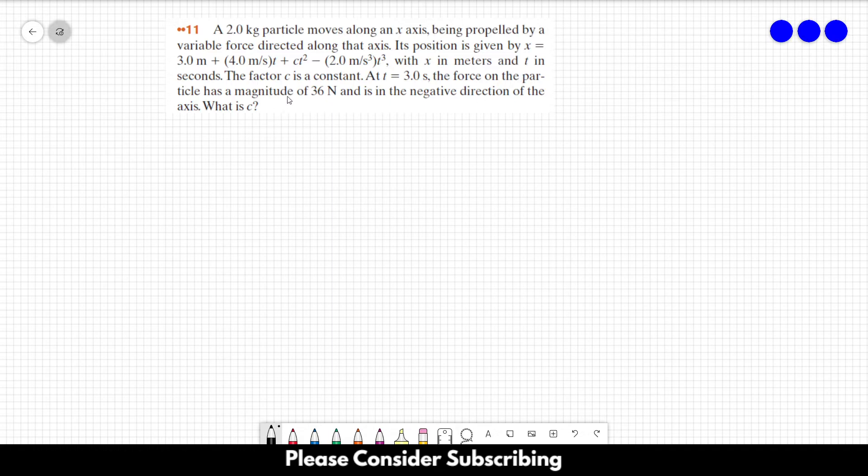The factor c is a constant. At t equals 3 seconds, the force on the particle has a magnitude of 36 N and is in the negative direction of the axis. What is c?